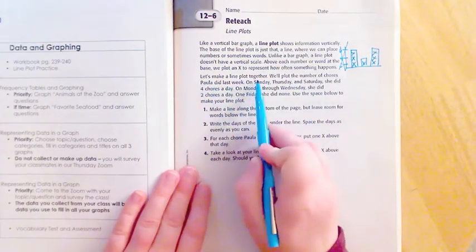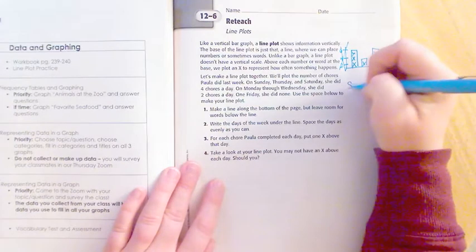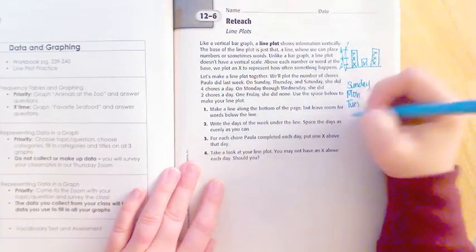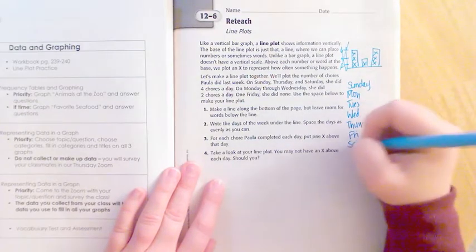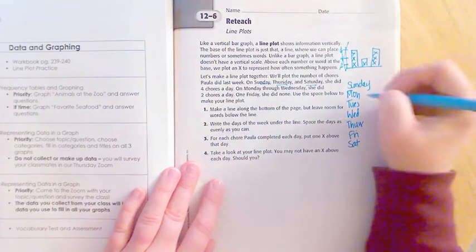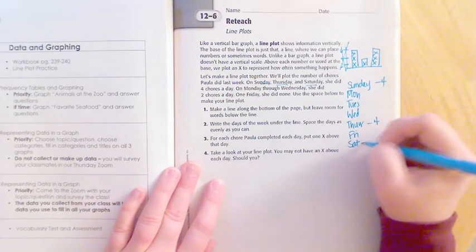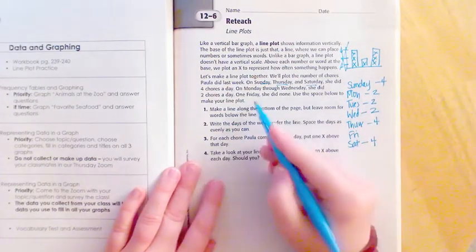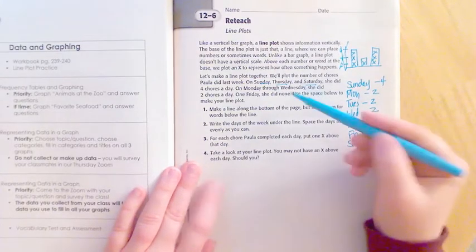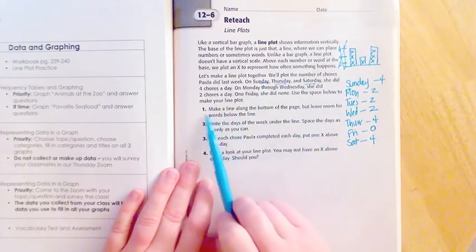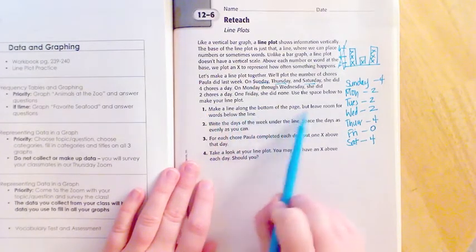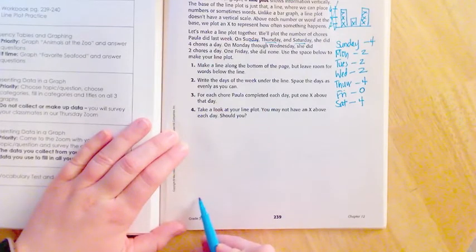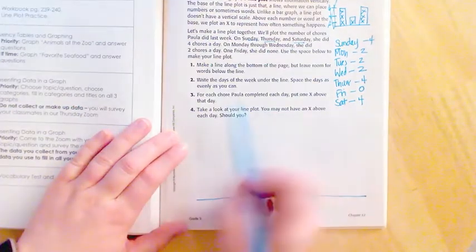Let's make a line plot together. We'll plot the number of chores Paula did last week. Sunday, Monday, Tuesday, Wednesday, Thursday, Friday, Saturday. On Sunday, Thursday, Saturday she did four. On Monday through Wednesday she did two. On Friday she did none. We're gonna read through these steps to show us how we would create a line. Number one, make a line along the bottom of the page but leave room for words below.